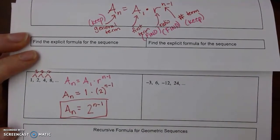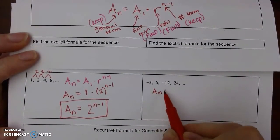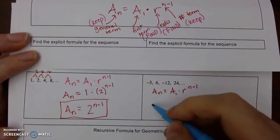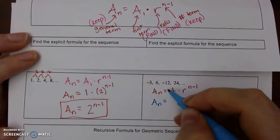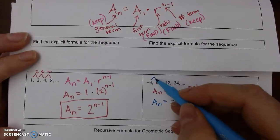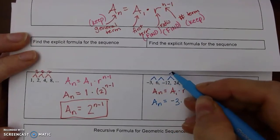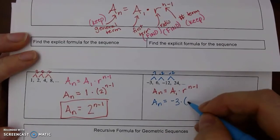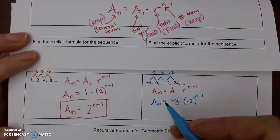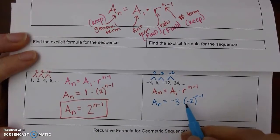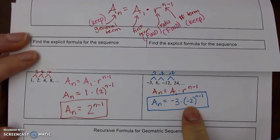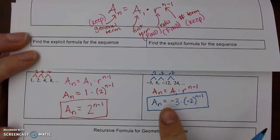Let's look at our second example. a_n equals a_1 times r^(n-1). We want to keep a sub n. Our first term is negative 3. Our ratio, what are we multiplying by? We're multiplying by negative 2. Since this is a negative, you need to use parentheses. We're not allowed to multiply those together. So this is our final answer. Please use parentheses because order of operations would be different if you don't.